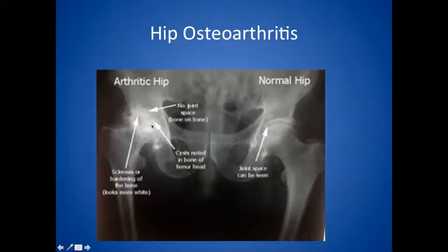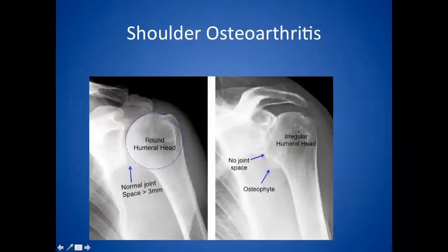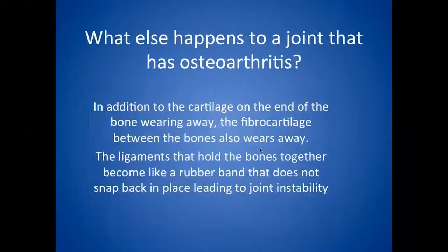Looking at the shoulder joint: the humeral head is normally round with a visible joint space where cartilage allows the X-ray beam through. As osteoarthritis progresses, you see big bone spurs — called osteophytes — the shape of the humeral head changes, and the space between the two bones disappears because the cartilage has worn off. Different joints respond differently to osteoarthritis.